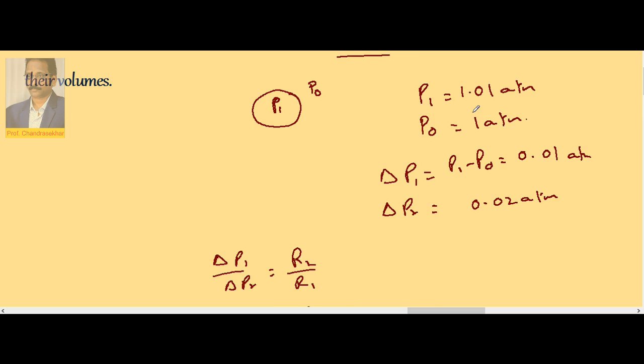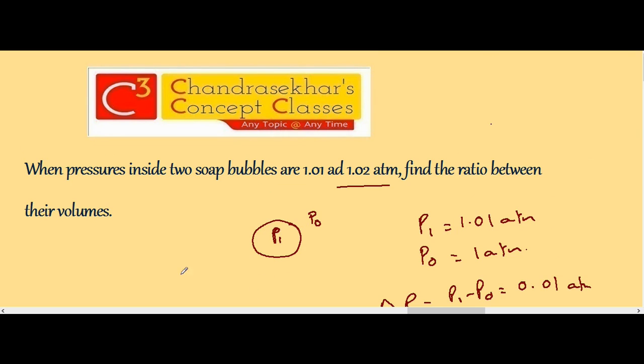So the difference is the excess pressure delta P1 or delta P2.